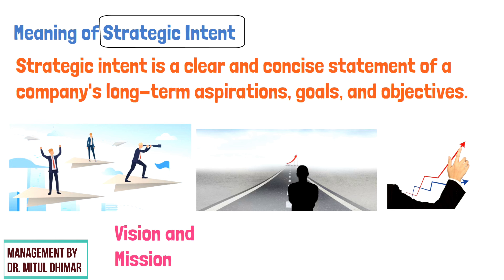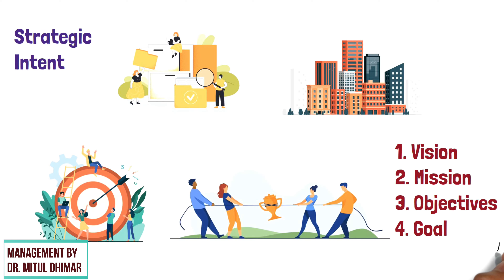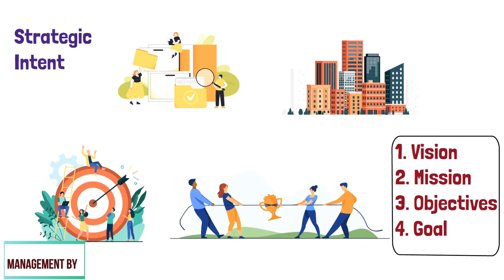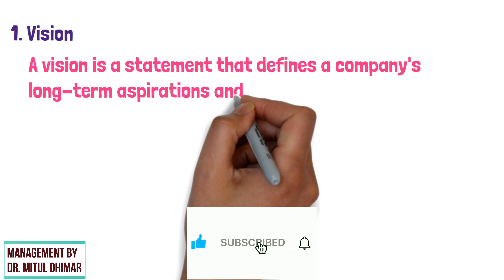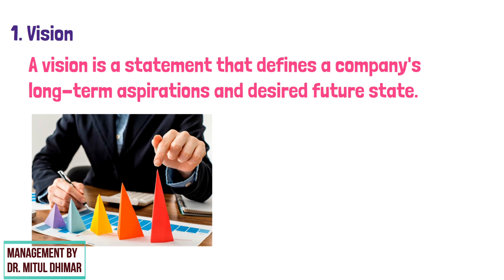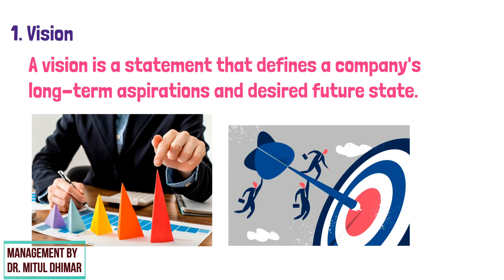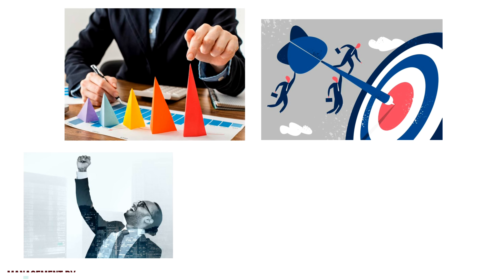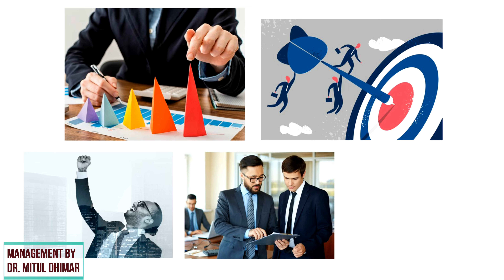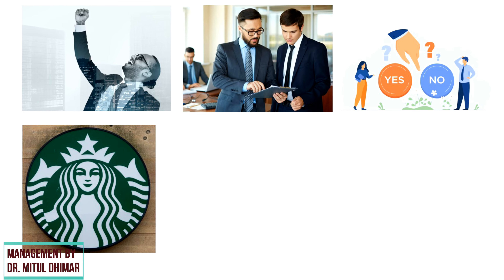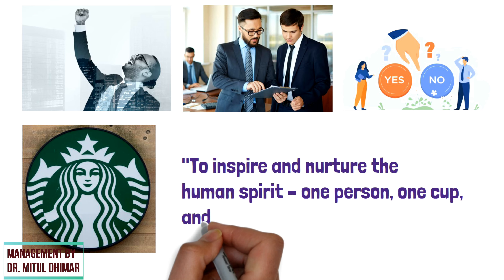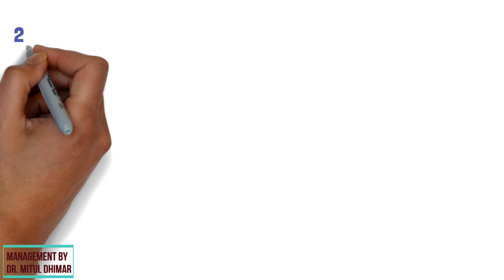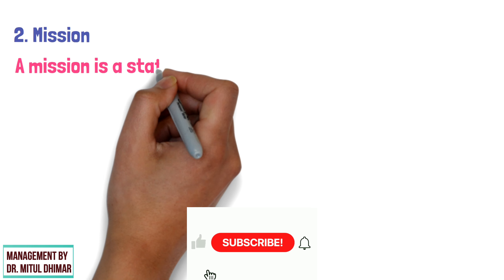Strategic intent often focuses on the company's vision and mission, as well as its core values and principles. One: Vision. A vision is a statement that defines a company's long-term aspirations and desired future state. It sets the direction for the organization and provides a clear sense of purpose. A vision statement is usually aspirational and inspirational, serving as a guide for the company's decisions and actions. For example, Starbucks' vision is to inspire and nurture the human spirit — one person, one cup, and one neighborhood at a time.